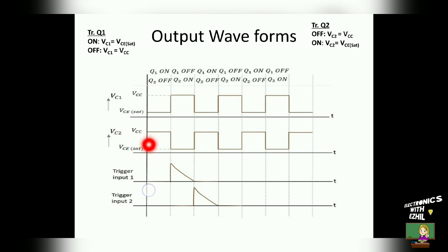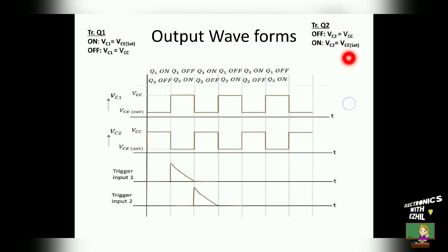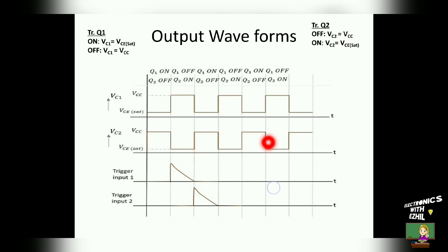Now we will see how to draw the output of transistor 2, which is VC2. During the first time slot, transistor 2 is at off state, so the output voltage VCE2 is VCC — the circuit stays at VCC. During the second time slot, transistor 2 is at on state, so the output voltage is VCE saturation — meaning the output switches from VCC to VCE saturation. During the third time slot the output returns to VCC, so the circuit switches from VCE saturation to VCC, and this repeats.